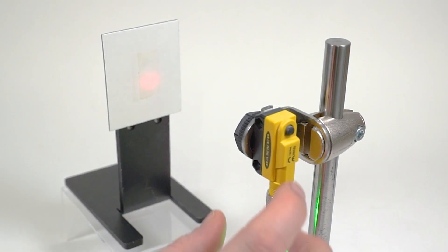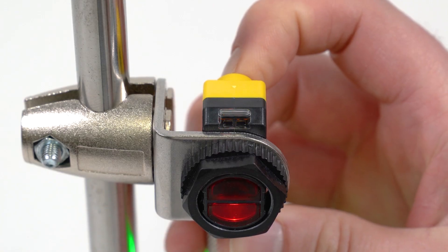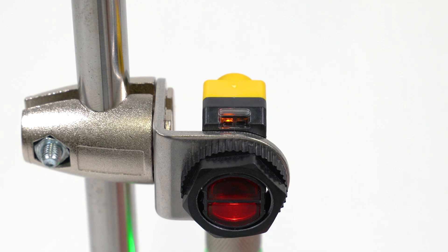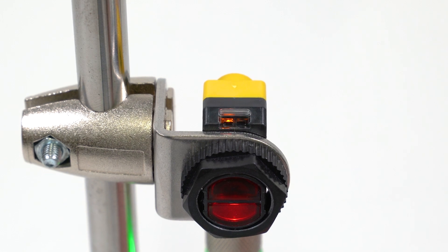To teach the sensor with the light set mode, press and hold the push button for two to four seconds until the green power LED turns off and the amber output LED flashes once per second.